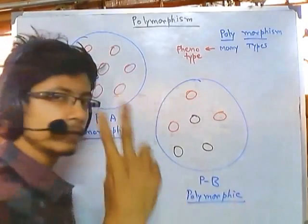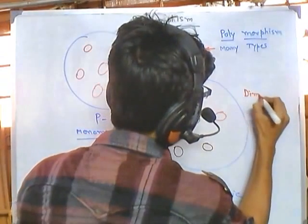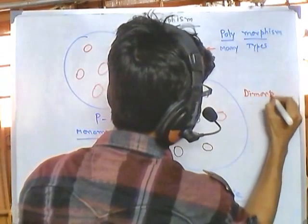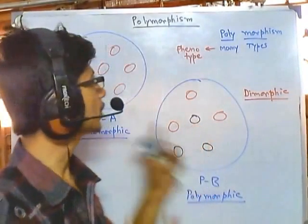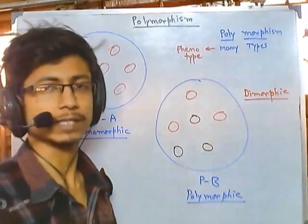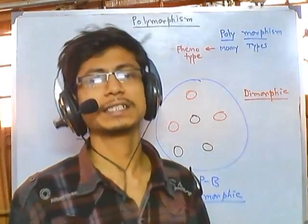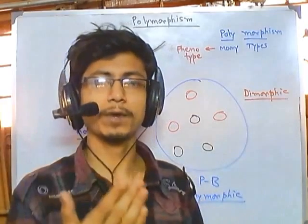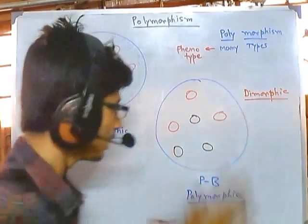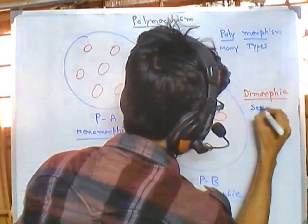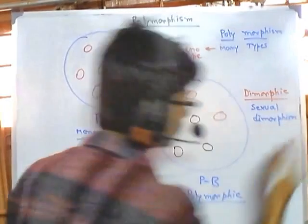Now in this case we are seeing two different characteristics, so we can call this a dimorphic population. An example of dimorphism is sexual dimorphism, shown in many populations like human beings. One type of phenotype is shown for males and one type for females — that is called sexual dimorphism among a population.